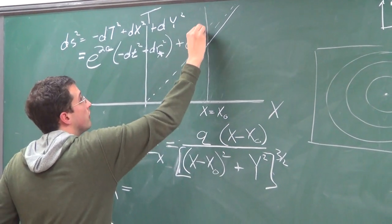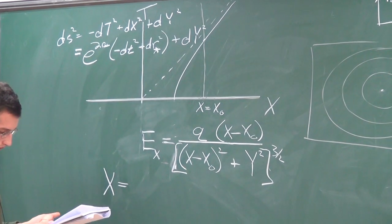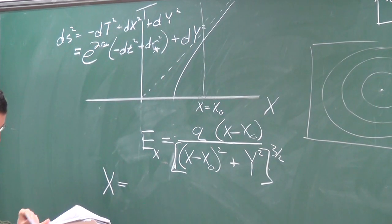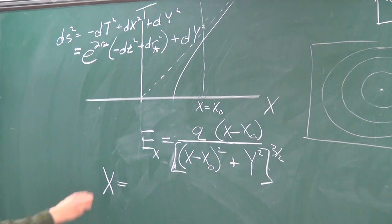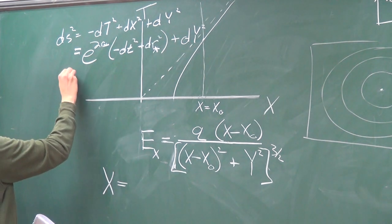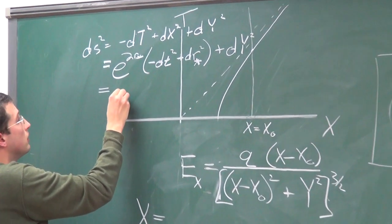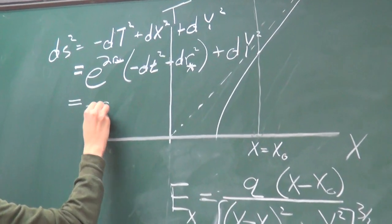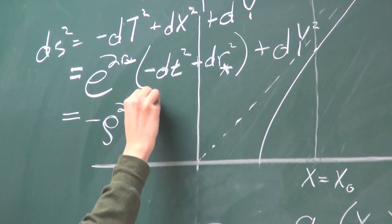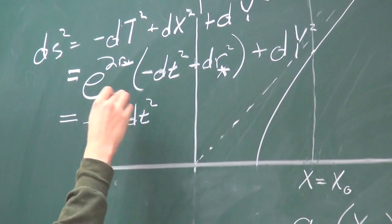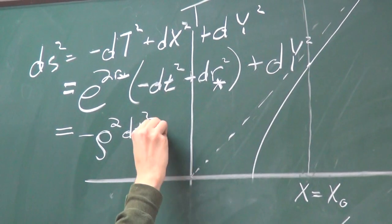Y is just going to go along for the Rindler. I want to use slightly different coordinates right now, which were mentioned yesterday but I didn't really use them. Instead of R-star, I want to use e to the R-star as a coordinate and call that Rho.